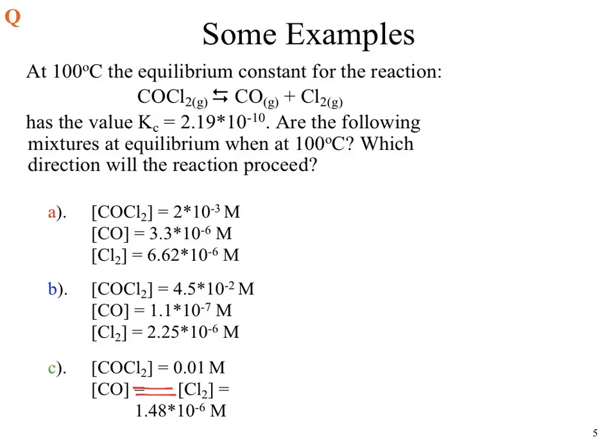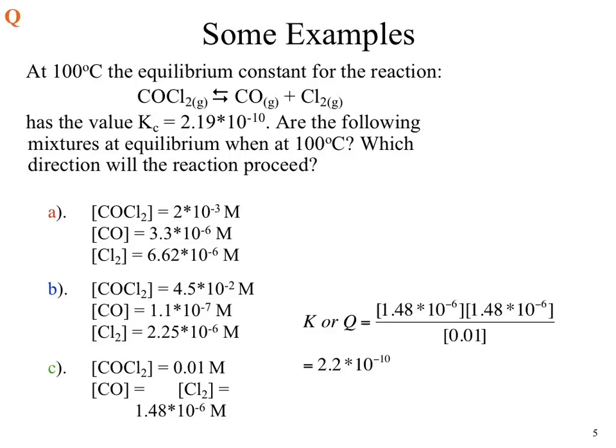So we're saying the concentration of carbon monoxide equals the concentration of chlorine, which equals 1.48 times 10 to the minus 6. Punch all the numbers into the calculator and we should end up with that expression.